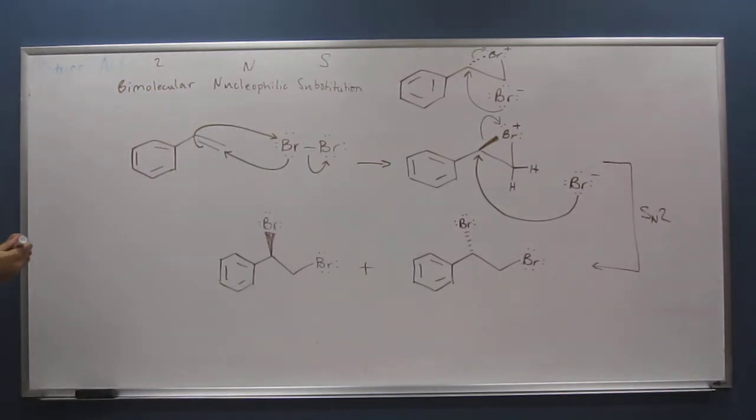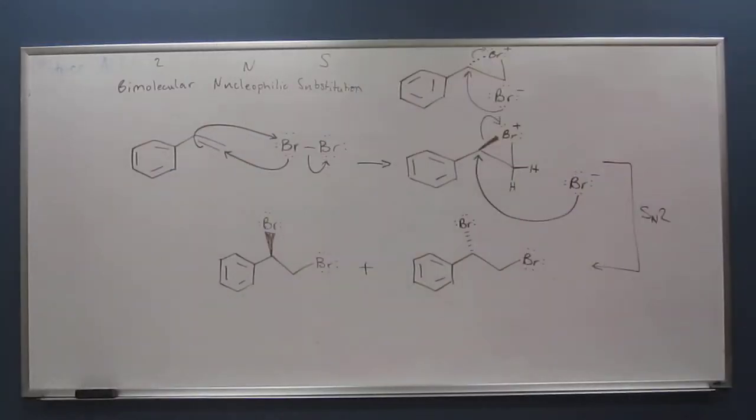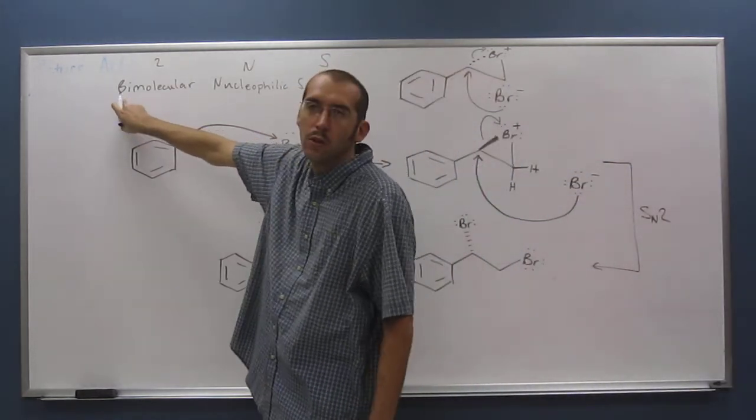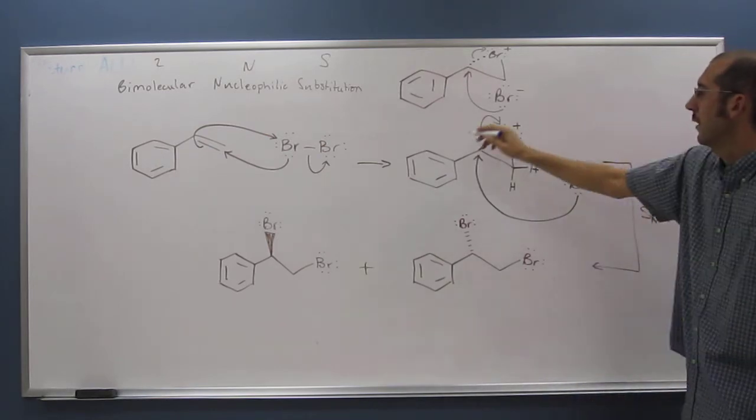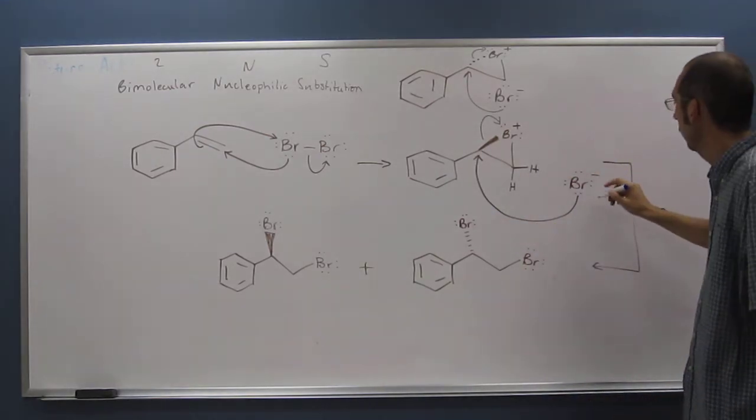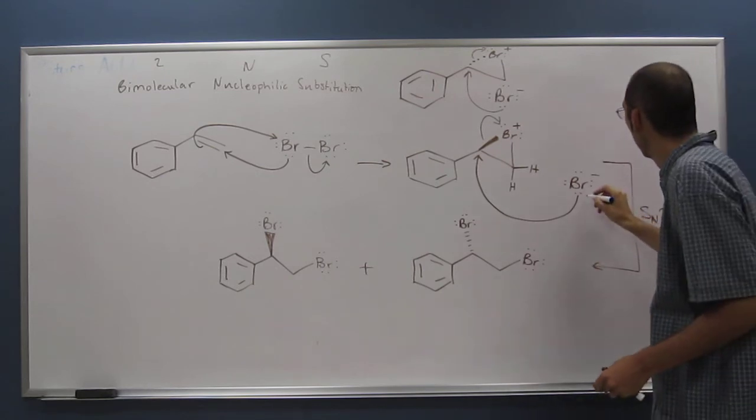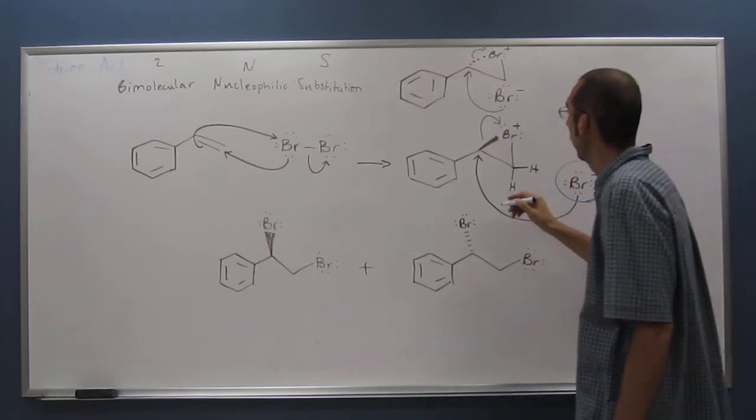Why is it called bimolecular? Because bi means 2, molecular means molecules. When we're looking at the SN2 part of this reaction, we're looking at two molecules reacting with each other. So this is one of those two molecules, and the other one is this.